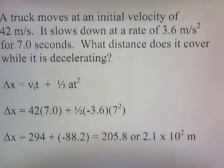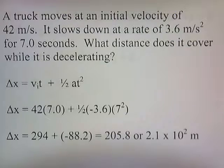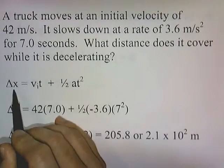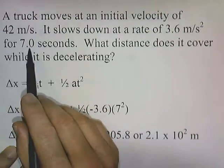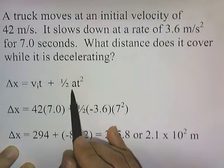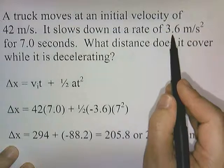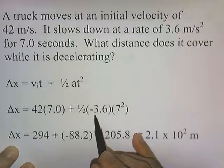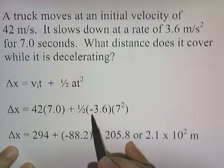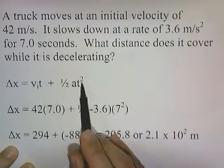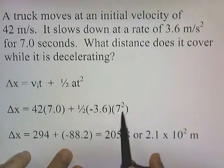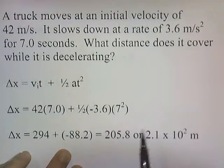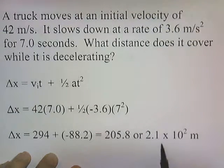A truck moves at an initial velocity of 42 meters per second. It slows down at a rate of 3.6 meters per second squared for 7 seconds. What distance does it cover while decelerating? We're solving for delta x. Vi is 42, t is 7. Since it's slowing down, acceleration is negative 3.6. So 42 times 7 is 294, and one-half times negative 3.6 times 7 squared is negative 88.2. That gives us 205.8, or to two significant figures, 2.1 times 10 to the 2 meters.